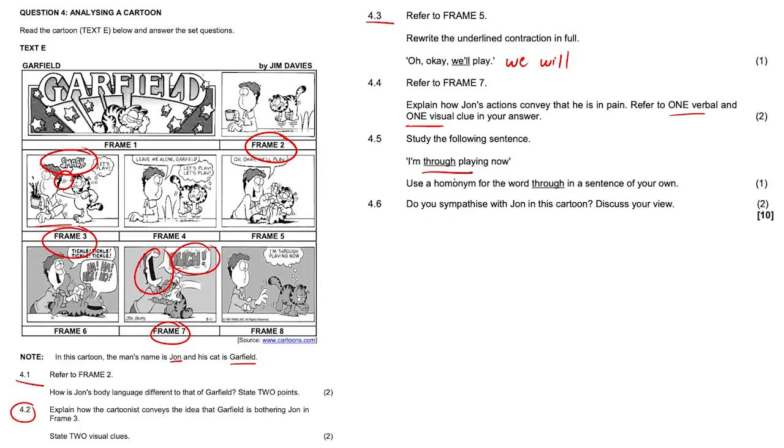Study the following sentence. I'm through playing now. That's 4.5. We need to provide a homonym here. So a homonym is like the word is spelled exactly the same but it just has a different meaning, versus a homophone being pronounced the same but being spelled differently. So through: I'm through playing now, like I'm done playing now, versus I looked through the window to see what was outside.